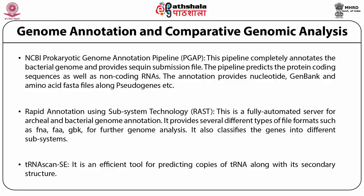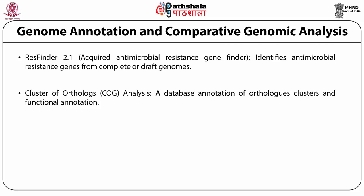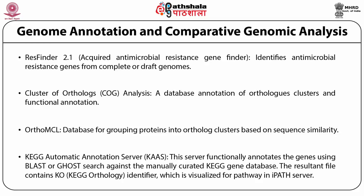The tRNA scan SE is an efficient tool for predicting copies of tRNA along with its secondary structure. The RAST finder 2.1 identifies antimicrobial resistant genes from complete or draft genomes. The cluster of orthologs (COG) analysis is a database for annotation of ortholog clusters and functional annotation. OrthoMCL is a database for grouping proteins into ortholog clusters based on sequence similarity. The KEGG automatic annotation server (KAAS) functionally annotates genes using BLAST or GHOST search against the manually curated KEGG gene database; the resultant file contains KEGG orthology (KO) identifiers, which are visualized for pathways in the iPath server.